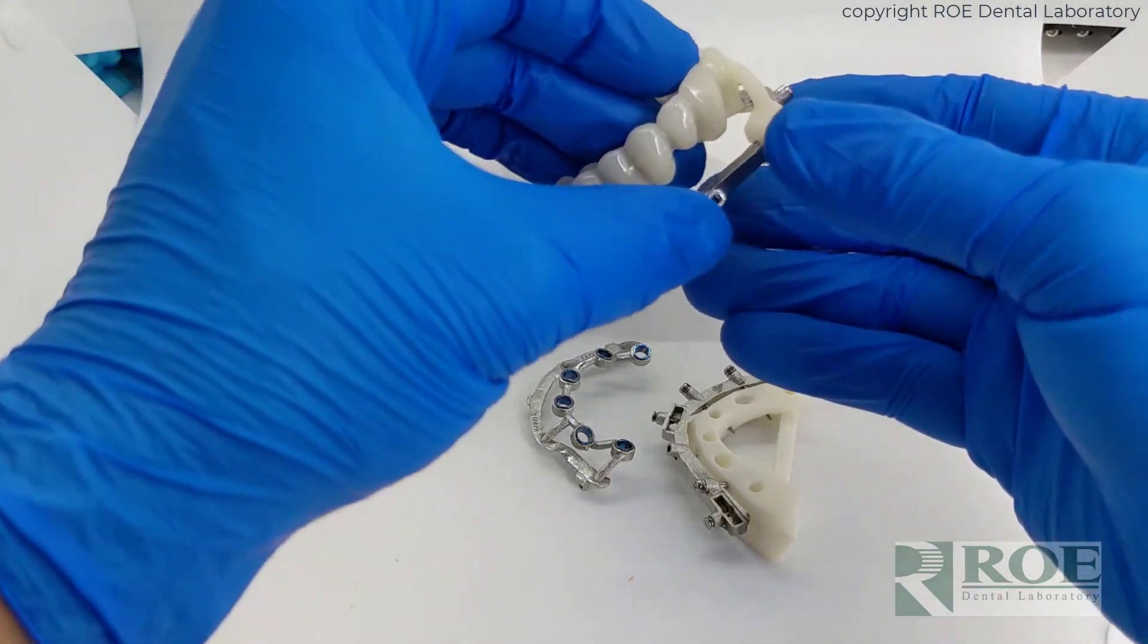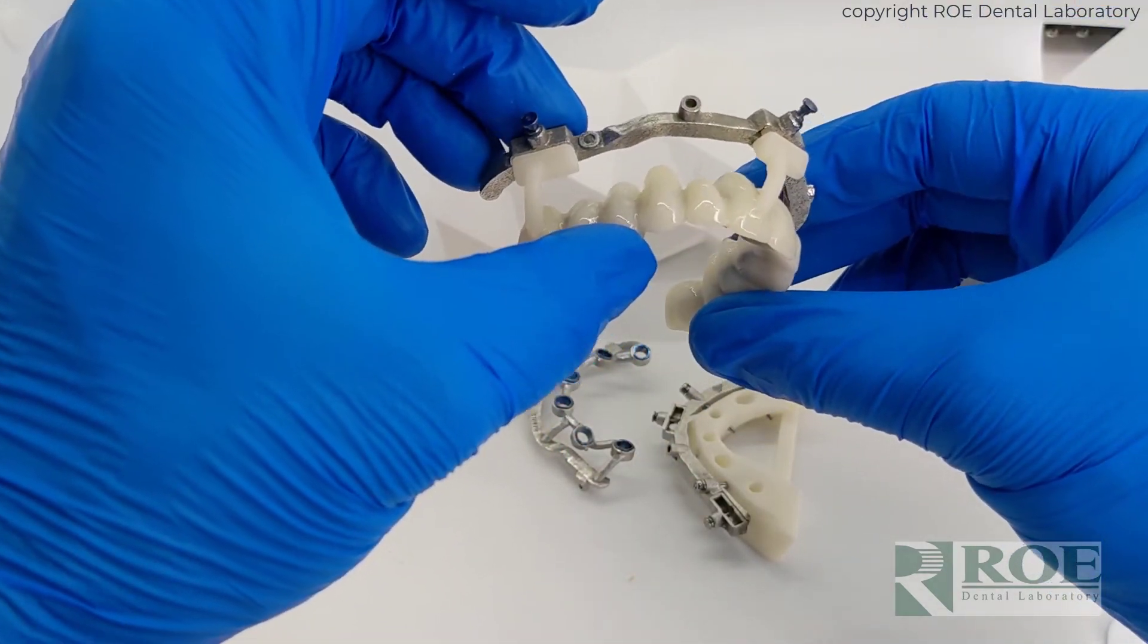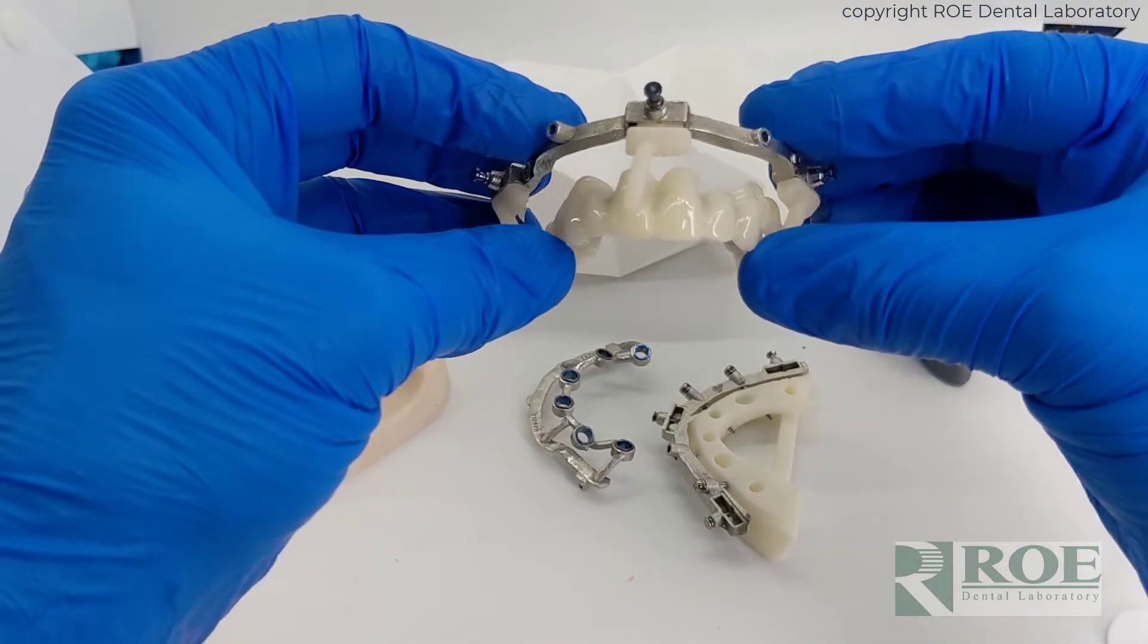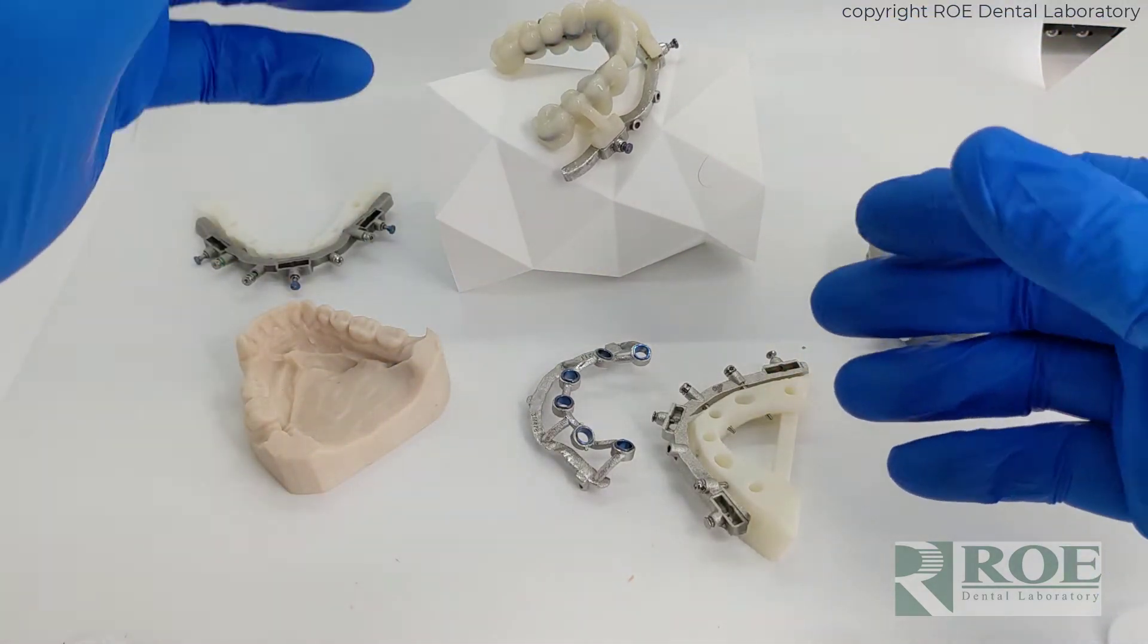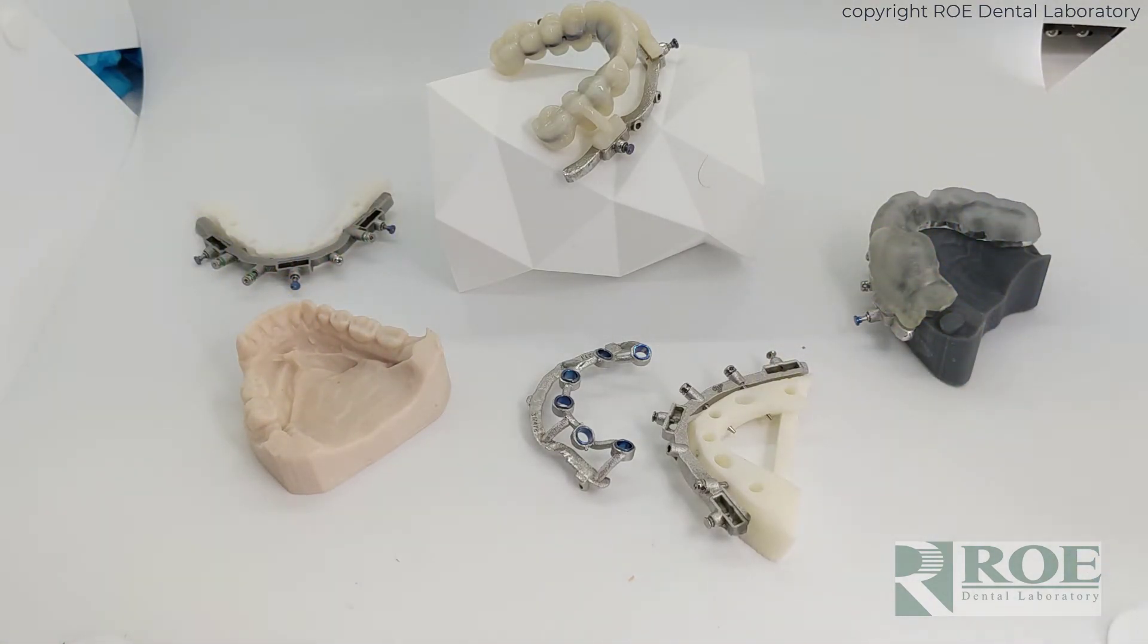And one perk with metal is that we can more easily design an FP1 type prosthetic. So those are some of the reasons of why to use metal base guides over plastic guides. Chrome guided smile.